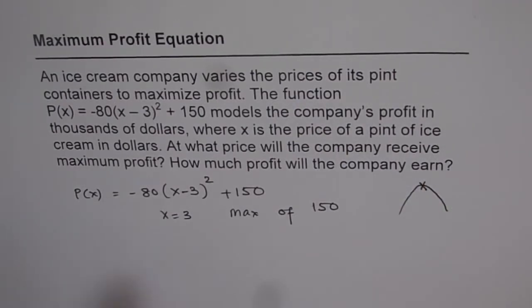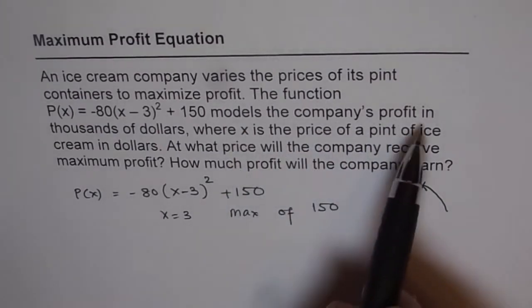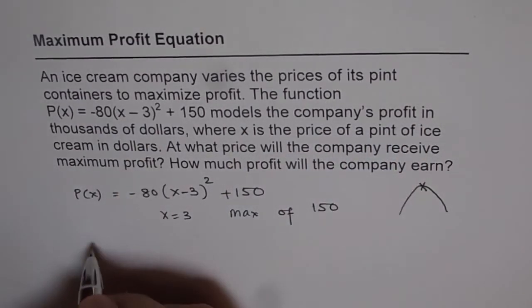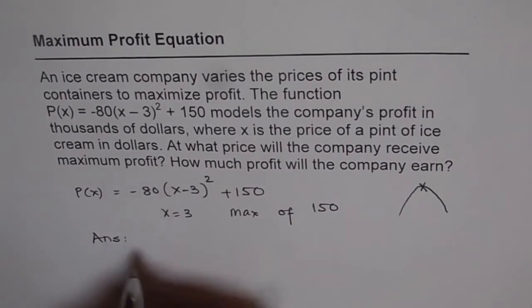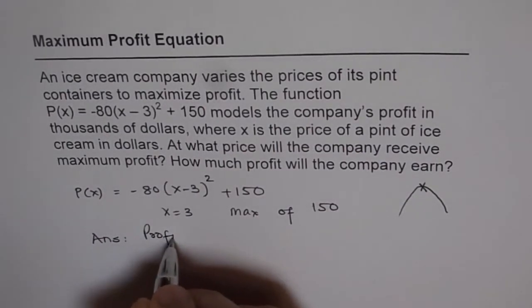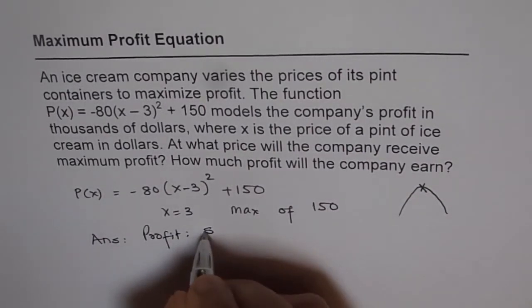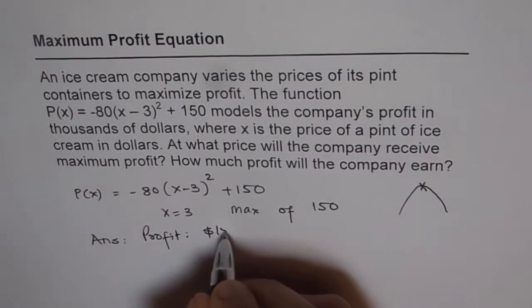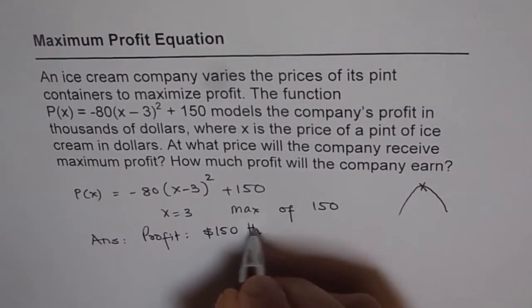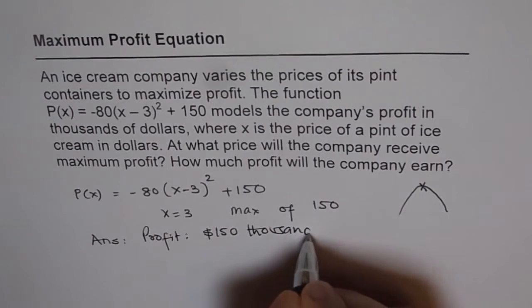Now the second part to this is read the units that says models companies profit in thousands of dollars. So when you write your answer you say profit is $150,000. So that is very important, right?